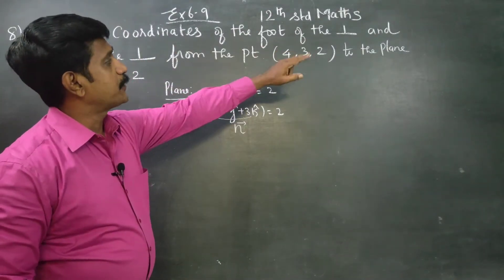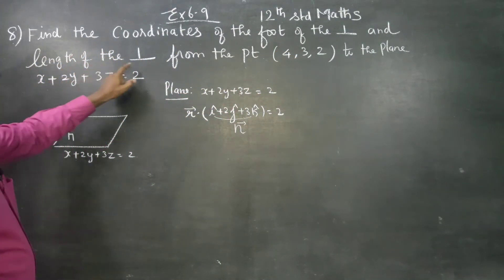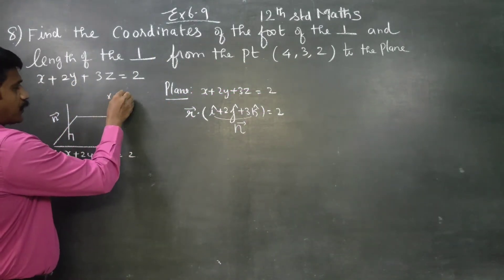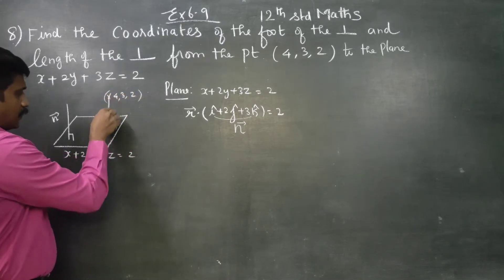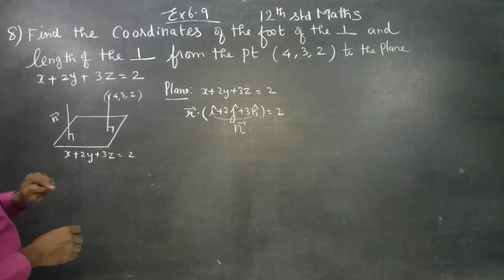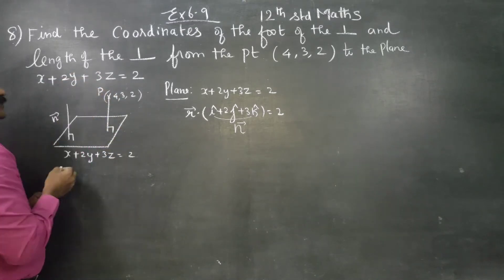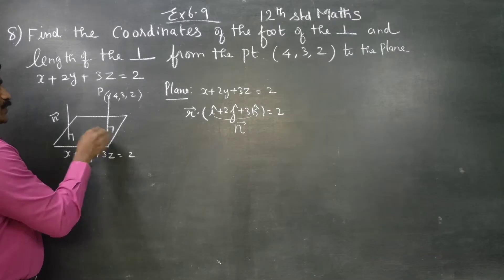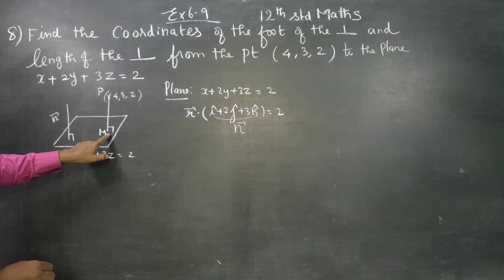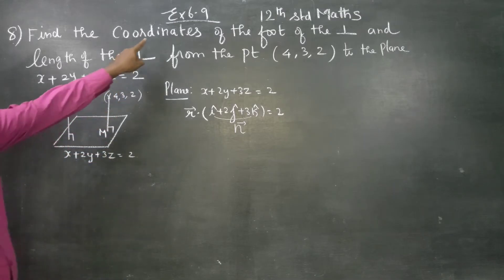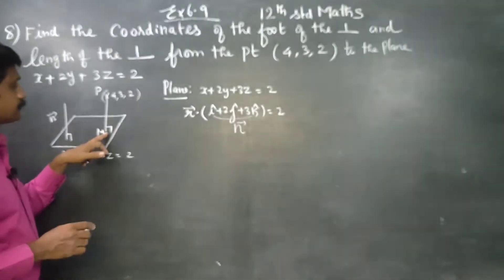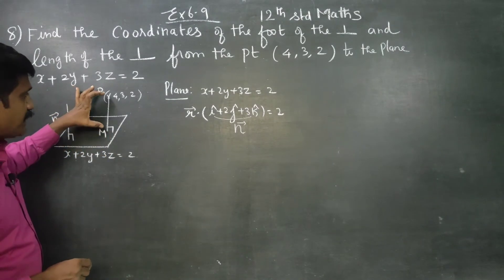Find the coordinates of the foot of the perpendicular and the length of the perpendicular from the point (4, 3, 2) to the plane. The foot of the perpendicular is the point M, where the perpendicular from point P meets the plane. M is the coordinates of the foot of the perpendicular, and PM is the distance.